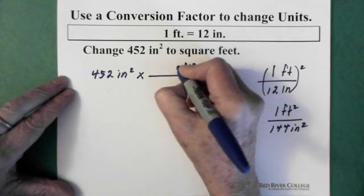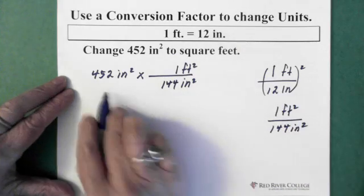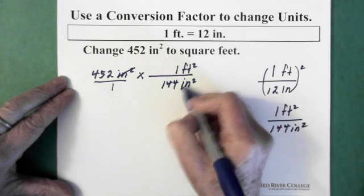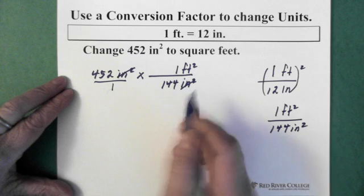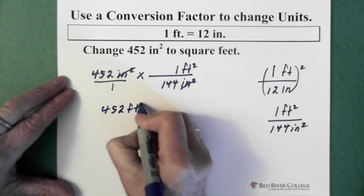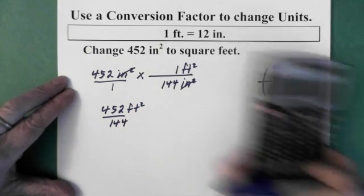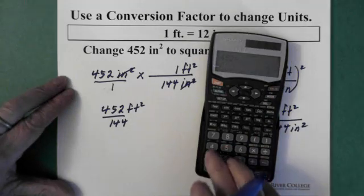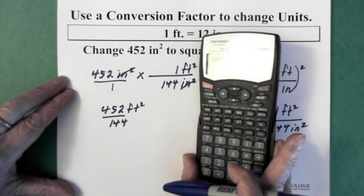So, then I put my 1 there. My 144 here. Again, multiplication of 2 fractions. So, my inches cancel. And I have 452 times 1 foot squared. So, on the top, we have 452 feet squared divided by 144. I do the division. 452 divided by 144 equals 3.14.